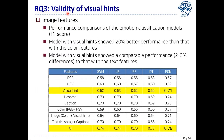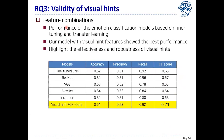RQ3 was about the validity of visual hints through modeling. We compared the performance of the emotion classification model using F1 score as a metric. The model with visual hints showed 20% better performance than with the color feature. Also, the model with visual hints showed comparable performance to that with text feature. The model performed up to 0.76 when all features were used.